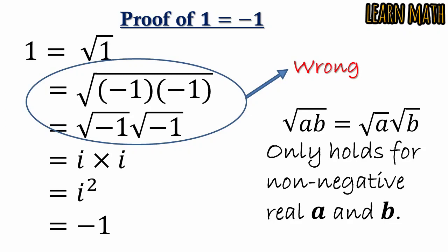So both proofs by two methods are wrong, and we cannot prove it like this. 1 equals -1 is not possible. I hope you learned something from this video. Like it, share with your friends, and don't forget to subscribe to my YouTube channel. Thank you.